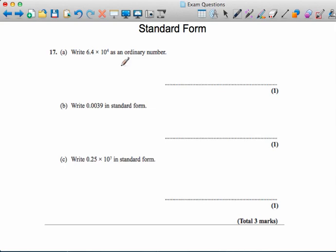In this first part, the number is already in standard form. 6.4 is a number between 1 and 10, multiplied by 10 to the 4. To write this as an ordinary number, we start with 6.4 and multiply by 10 to the 4.